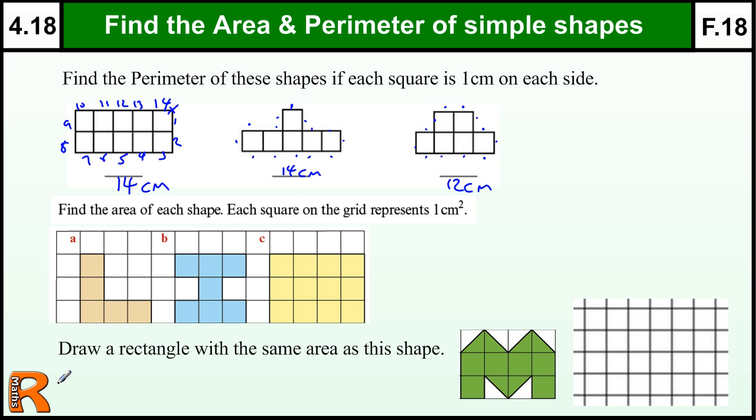OK, we've got some shapes on a grid. How many, what's the area of each shape? So that's just counting the squares. 1, 2, 3, 4, 5 for that one. So that's 5 cm squared, or square centimeters.